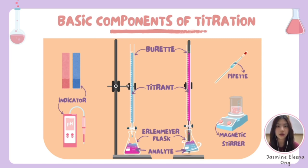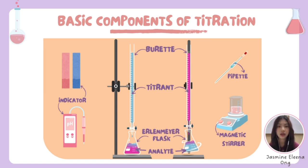Firstly, the titrant is the solution of known concentration that is gradually added to the analyte solution, also sometimes called the standard solution. The analyte is the solution of unknown concentration that the titrant is being added to, and its typical volume is known. A burette, which is a long graduated glass tube with a stopcock at the bottom, allows for the controlled addition of the titrant solution in small, measured volumes.